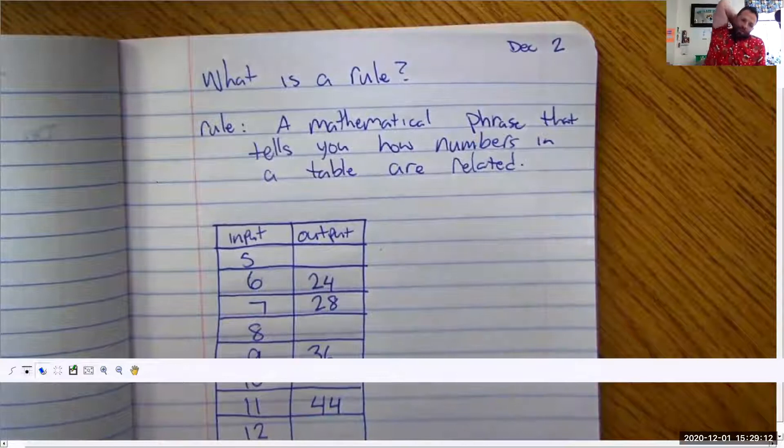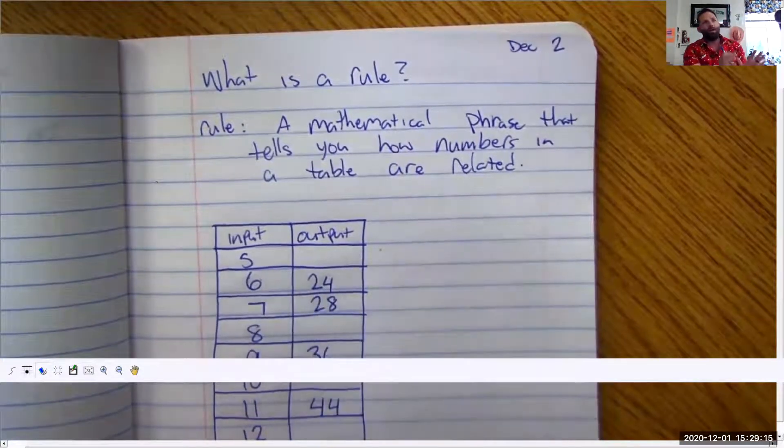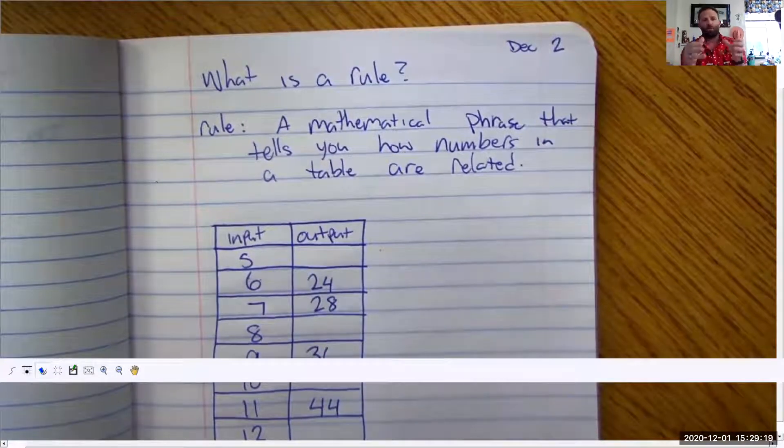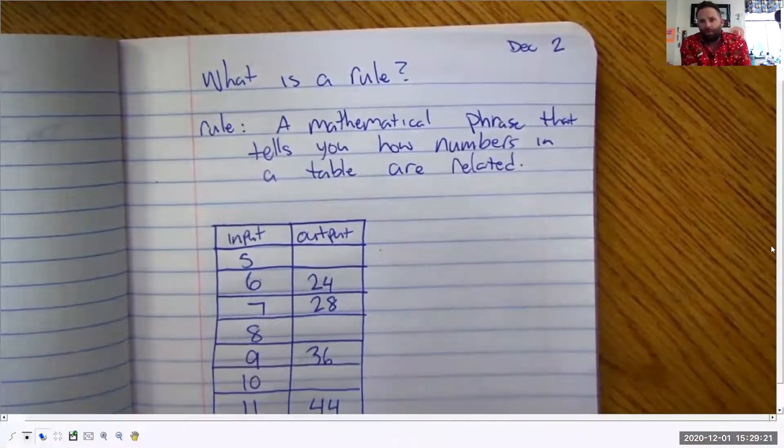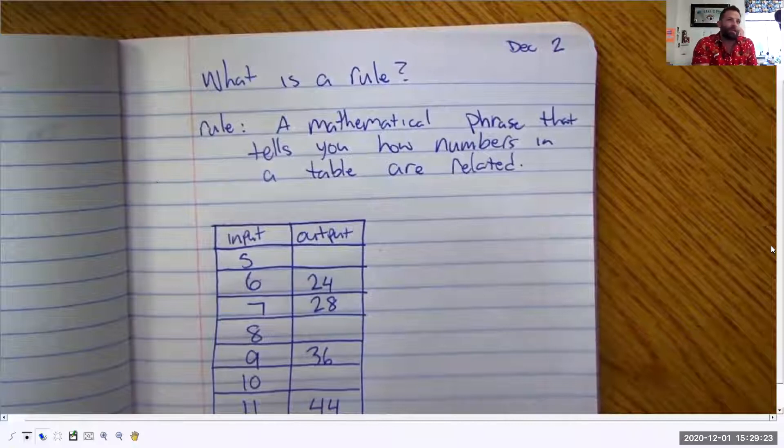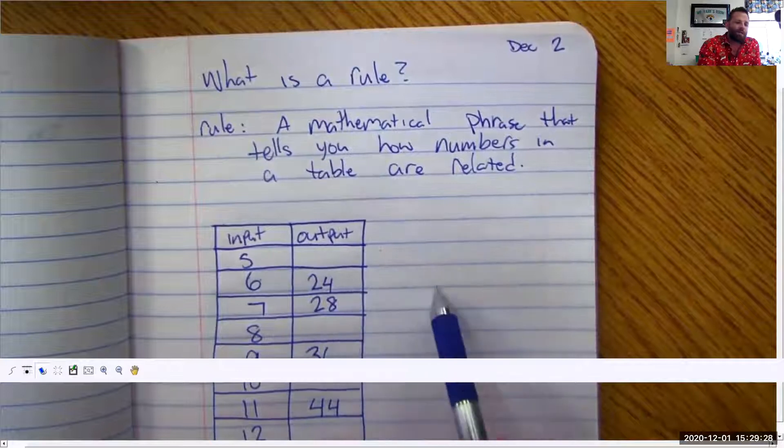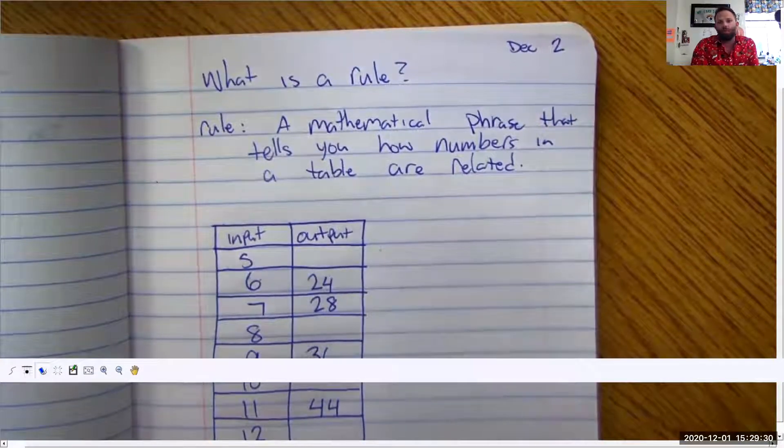What is the relationship between six and twenty-four? Now if a number goes in as six something happens to it and it comes out as twenty-four. Now you have a couple of ways to do this. You can look at it and say well six and twenty-four I've increased it by eighteen. But if you're saying that the rule is plus eighteen then it has to work for all the ones that you have.